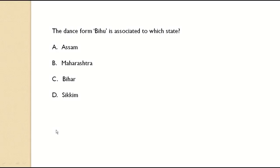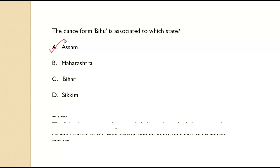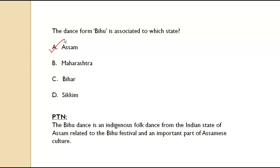The dance form Bihu is associated with which state? It is associated with Assam. The Bihu dance is an indigenous folk dance from the Indian state of Assam, related to the Bihu festival and an important part of Assamese culture.